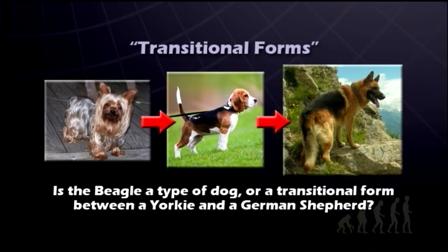An example we could use here is a beagle. The question would be: is a beagle a type of dog — simply a breed of dog — or is it a transitional form between a Yorkie and a German Shepherd? If we just looked at the bones and saw a Yorkie, a German Shepherd, and a beagle, would we recognize that as variation within a kind, which is what a biblical creationist would view that evidence as? Or would we be tempted to say that's evidence that this Yorkie is eventually going to turn into a German Shepherd?